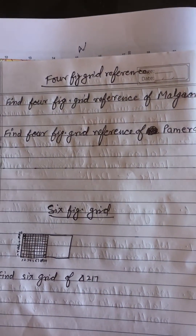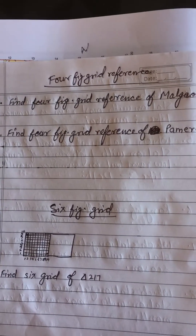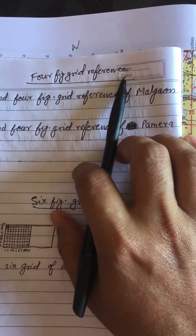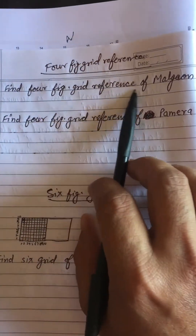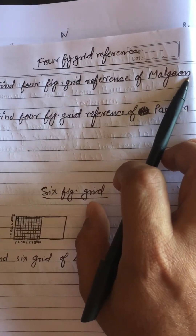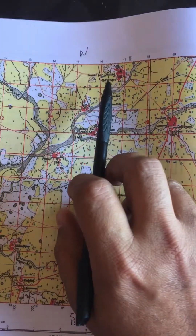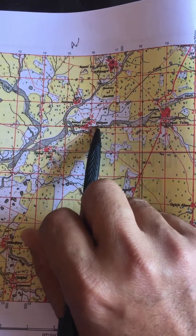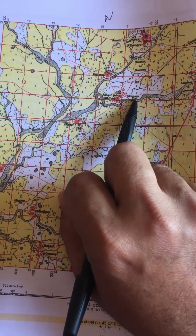Hello everyone, today we will discuss how to find a four-figure grid reference on a topo sheet. Here is a question: find the four-figure grid reference of Malagao. Let's first find Malagao on the topo sheet — it is exactly located here.